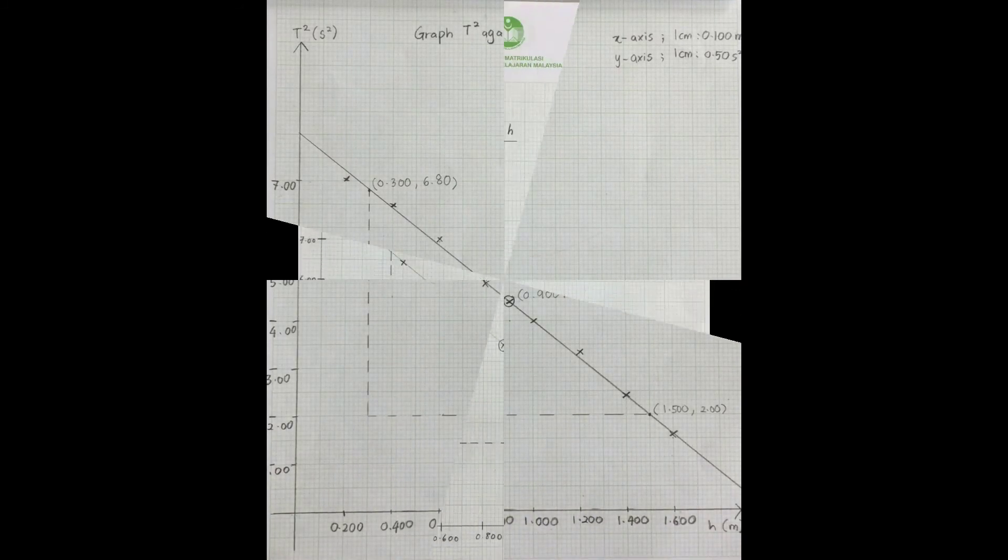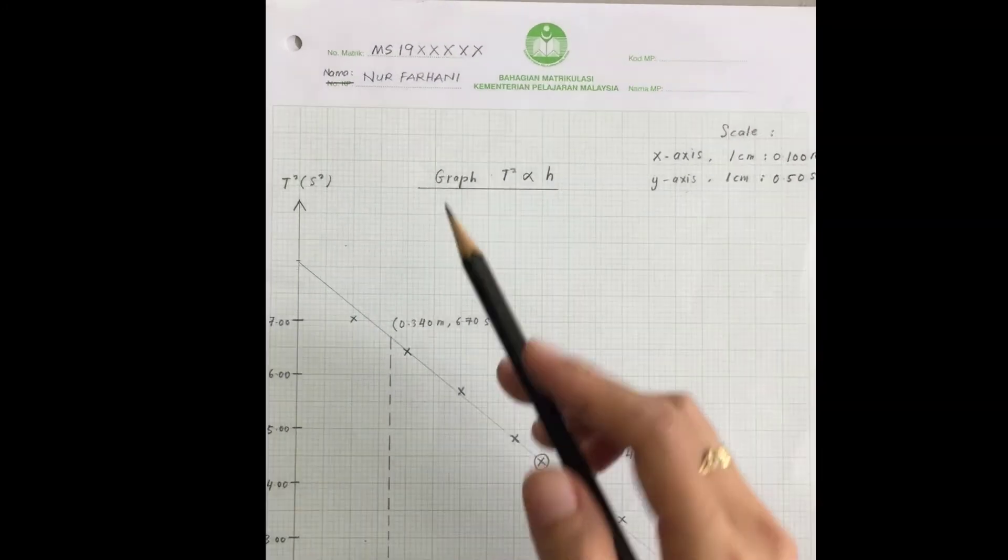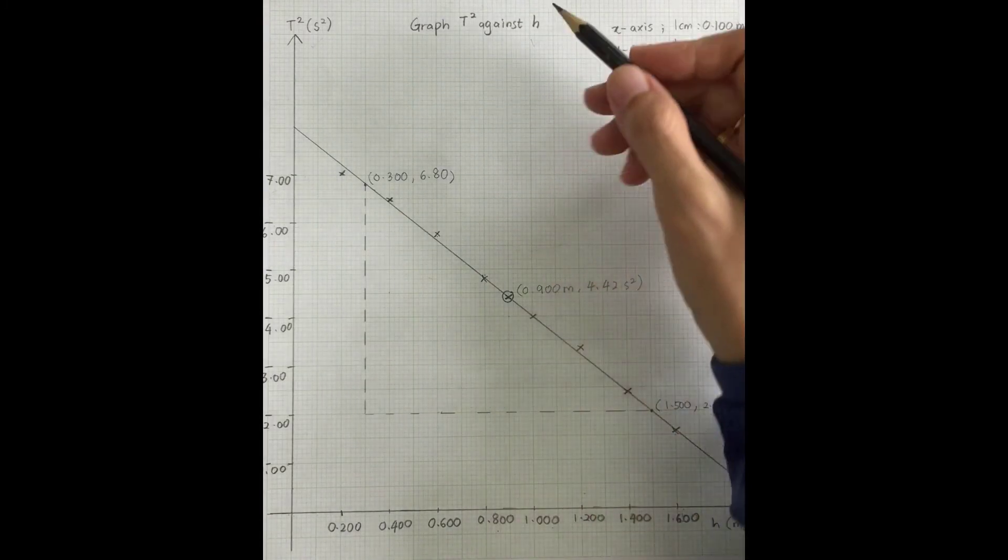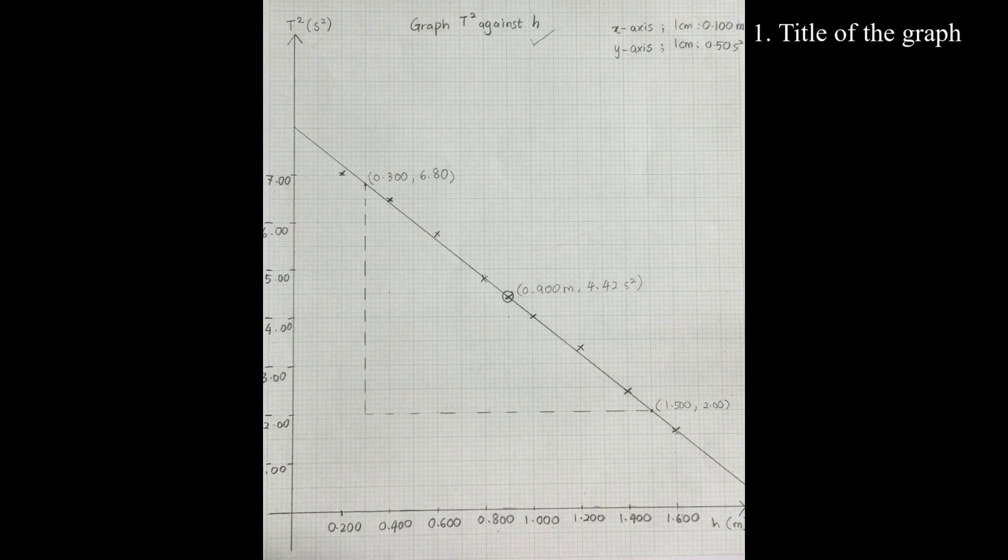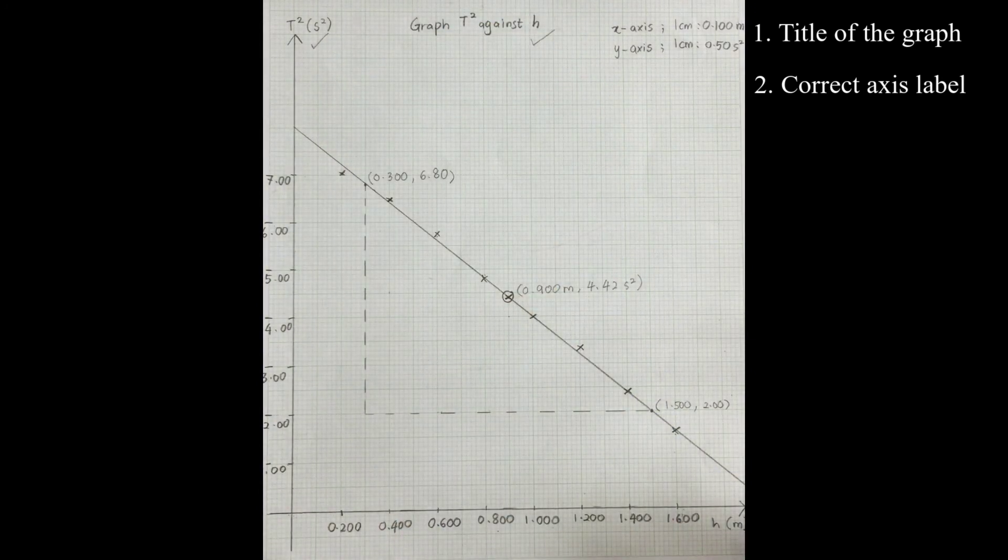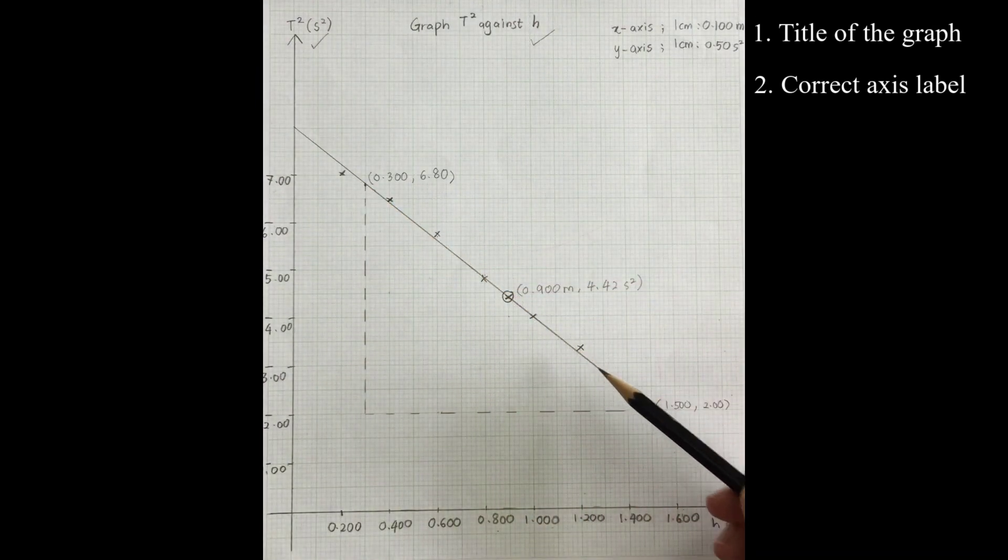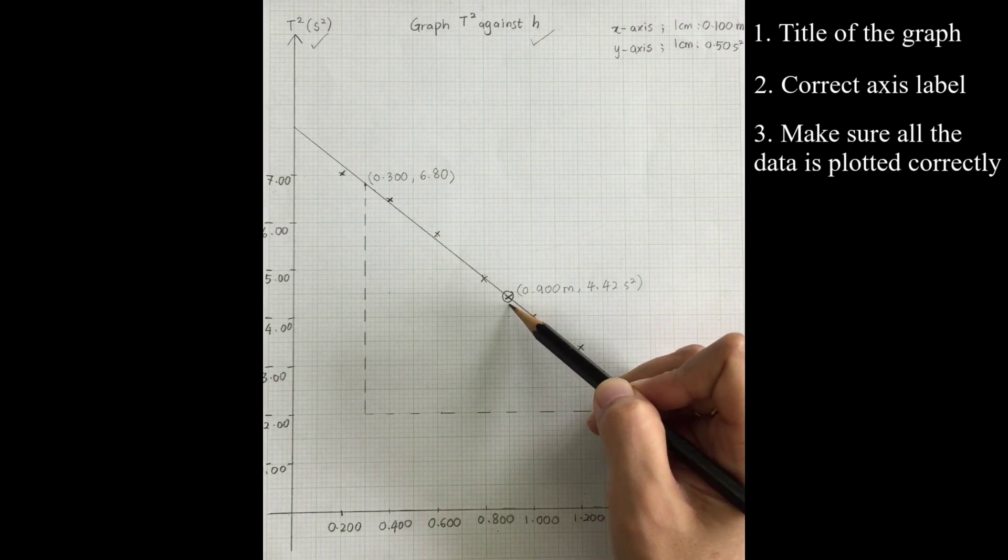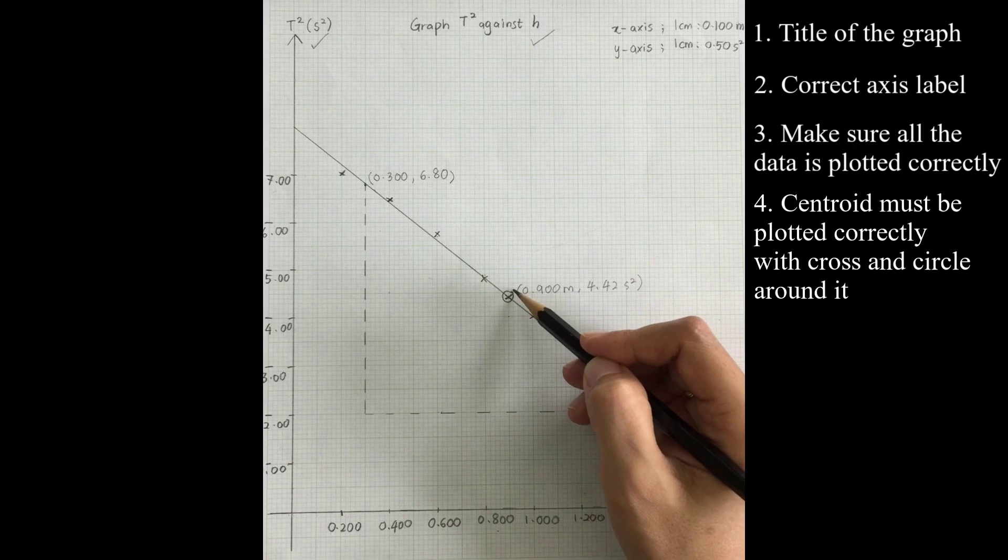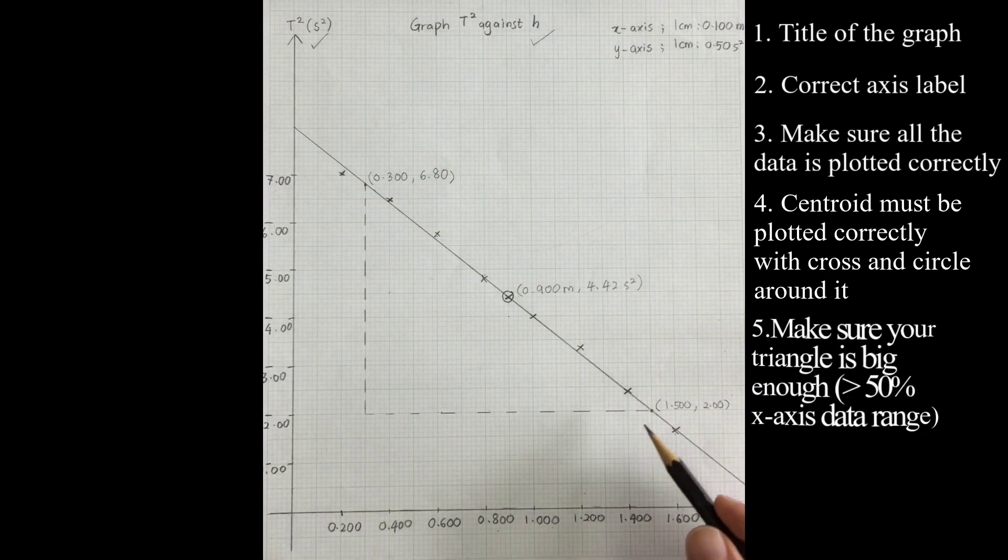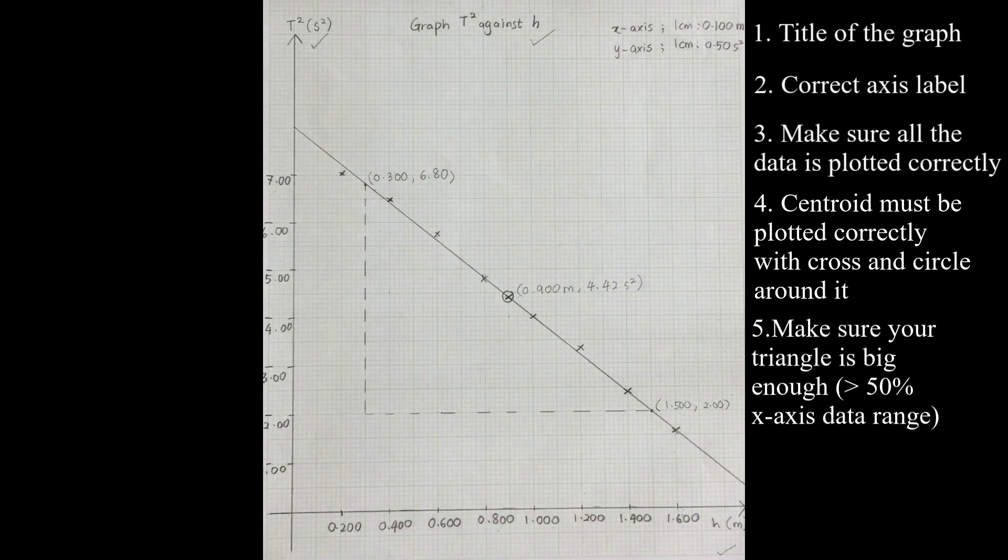Here is the complete one. Make sure you don't forget to write your name up here. Let's do the checklist. First, the title of the graph. Next, both axes are labeled with correct unit, so the y-axis is T squared and the unit is s squared, and your x-axis is h and the unit is meter. After that, for the data plotting, make sure all the data plotted correctly according to your table of data. Next is your centroid, so centroid must be plotted correctly with symbol cross and circle around it. After that, your triangle, make sure your triangle is big enough, the size must be greater than 50% of the x-axis data range.